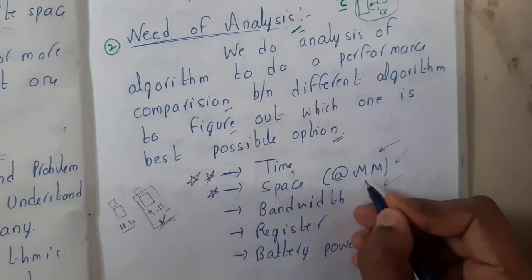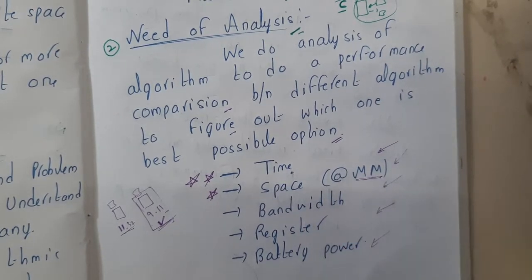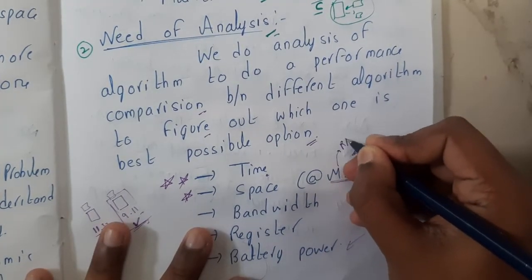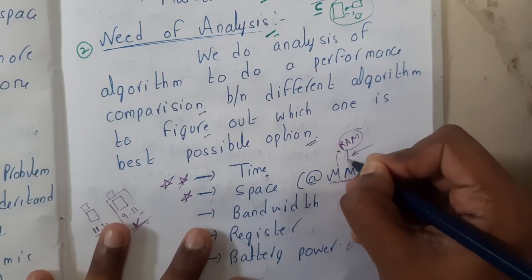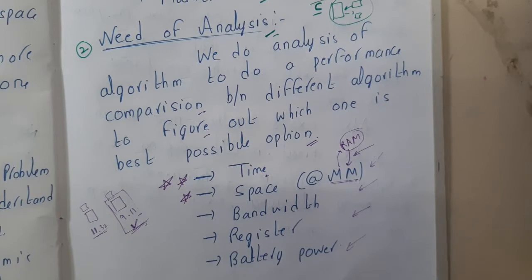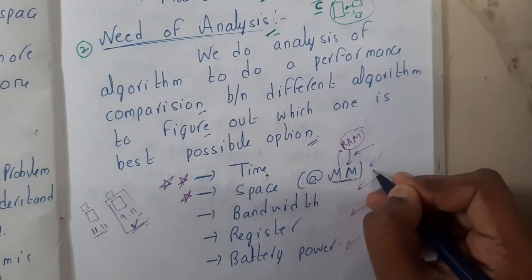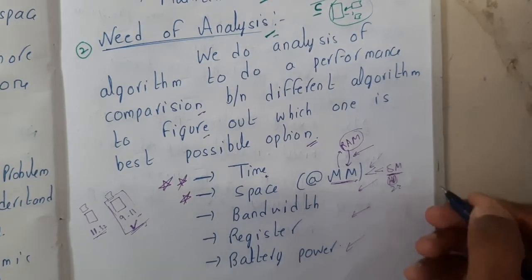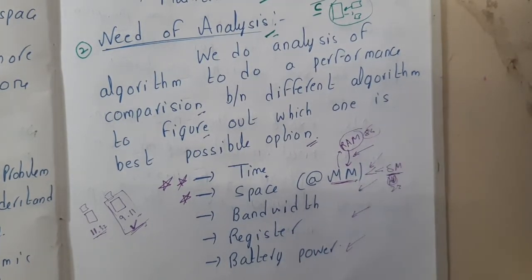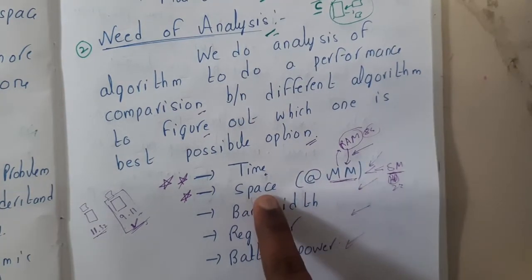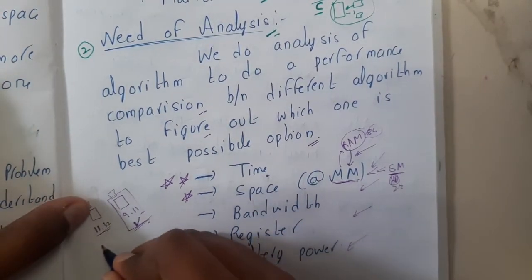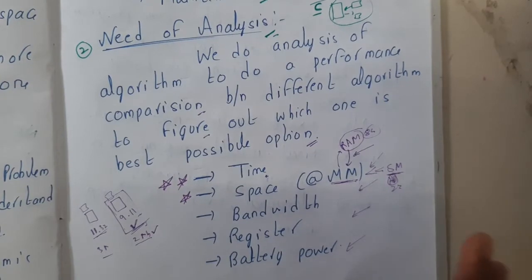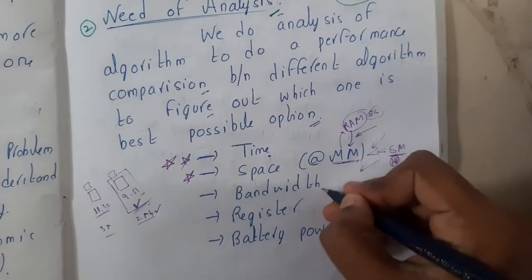Similarly, space analysis. When we discuss space, we talk with respect to main memory. When you buy a computer or laptop, you always check the RAM specification - that RAM is nothing but your main memory. Main memory size is always really less than your secondary memory, which is your hard disk. You'll say 2TB or 1TB for storage, but your RAM will be 8GB. So assume this program takes 3MB and this program takes 2MB - which is better? 2MB is better. In that way you compare with respect to space.